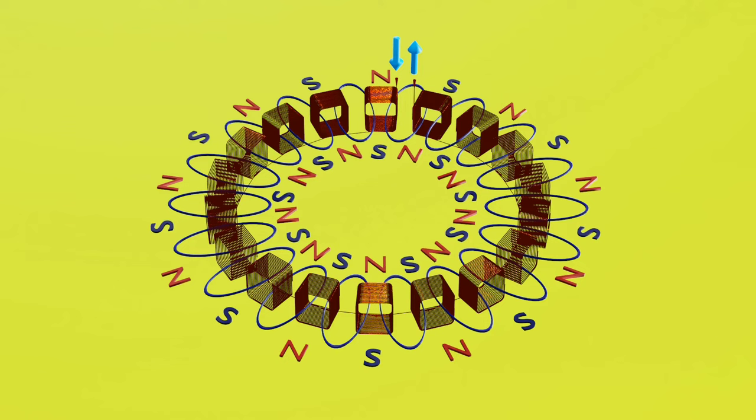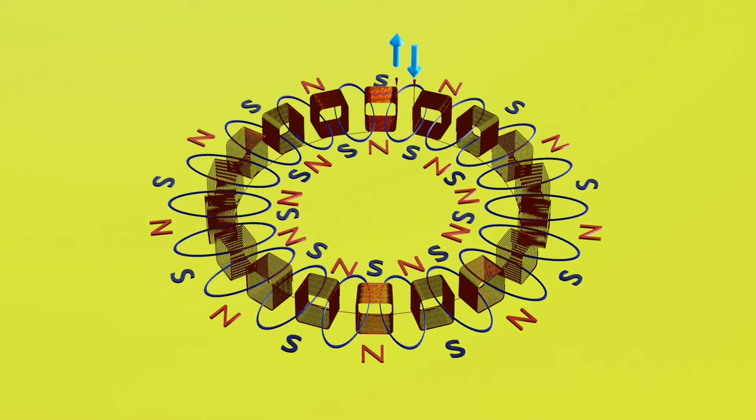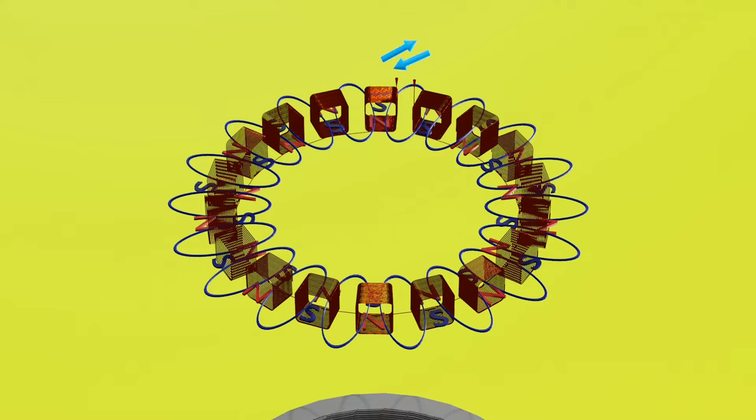The induction motor is not self-starting but why? When we give the alternating current to the winding, it produces magnetic field which is continuously changing from north to south and south to north.